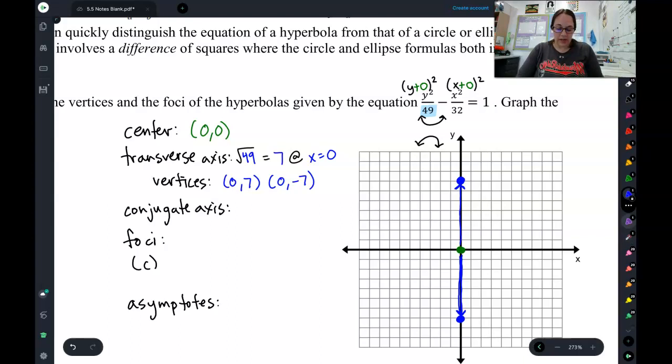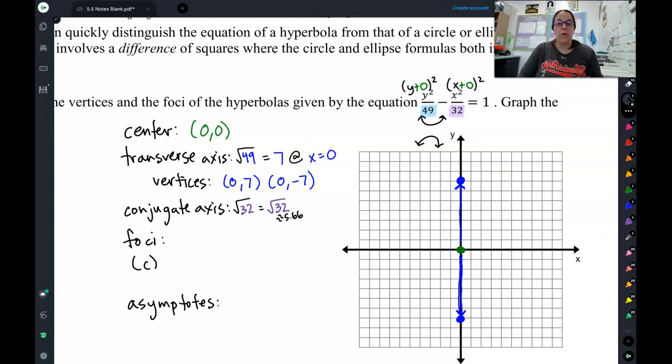Now let's do our conjugate axis. The conjugate axis is the number that comes second. So in this case, it's 32. And same thing as last time, we do need to square root it, because in the equation, it's squared. Now, square root of 32 is not a very pretty number. So I'm going to approximate it as a decimal, which should be about 5.66. So I'm going to go 5.66 to either side. 1, 2, 3, 4, 5, 0.66. There's my conjugate axis.